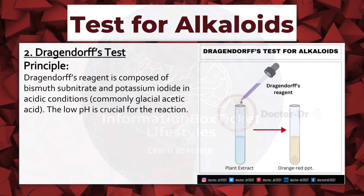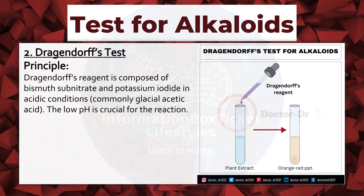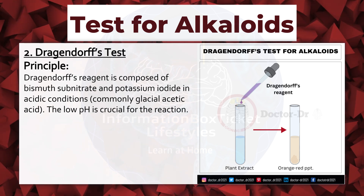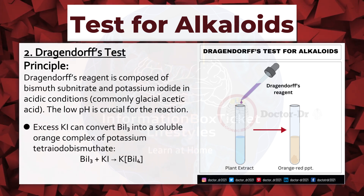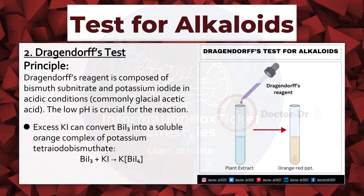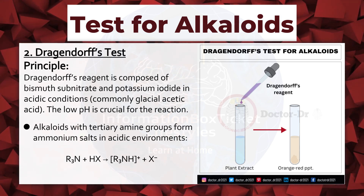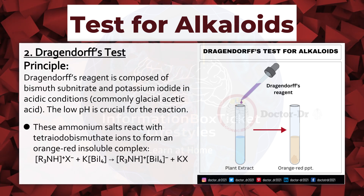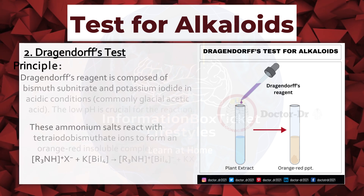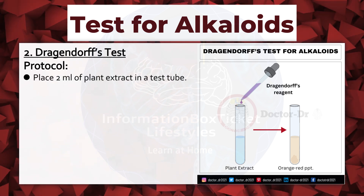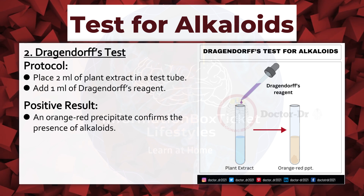Dragendorf's Test. Principle: Dragendorf's reagent is composed of bismuth subnitrate and potassium iodide in acidic conditions, commonly glacial acetic acid. The low pH is crucial for the reaction. Bismuth ions react with potassium iodide to form bismuth iodide, which can convert into a soluble orange complex of potassium tetraiodobismuthate. Alkaloids with tertiary amine groups form ammonium salts that react with tetraiodobismuthate ions to form an orange-red insoluble complex. Protocol: place 2 ml of plant extract in a test tube, add 1 ml of Dragendorf's reagent. Positive result: an orange-red precipitate confirms the presence of alkaloids.